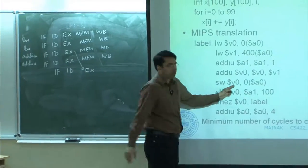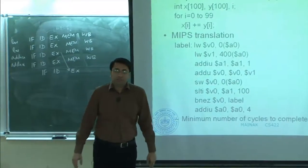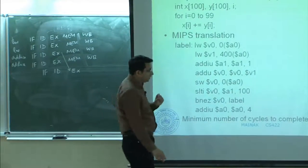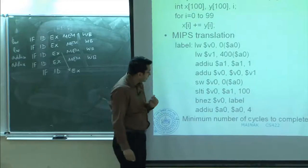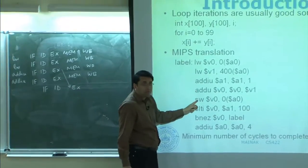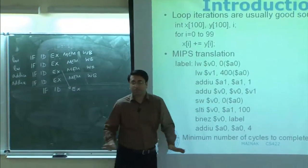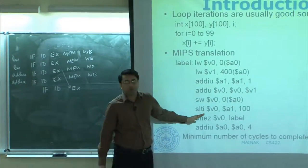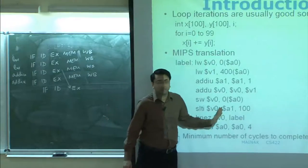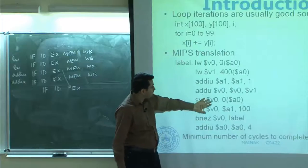This one also has a source dollar v0. But this is somewhat unfortunate — that is the important observation. Because as such, these two instructions have nothing to do with this one — absolutely nothing. This is a completely independent operation. It is just comparing dollar a1 against 100; it does not use any results from these two instructions.